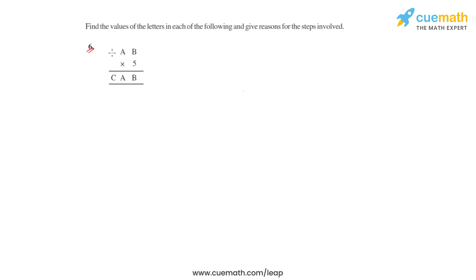In question number six of this first exercise, we have a puzzle with a multiplication product of a two-digit number with a single digit, giving a three-digit number. This multiplication consists of the letters a, b, and c, so we'll have to find the values of these letters and give reasons for the steps involved.